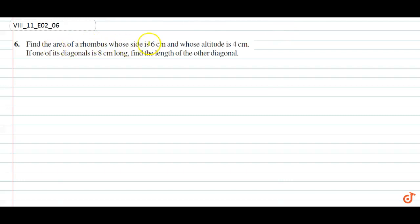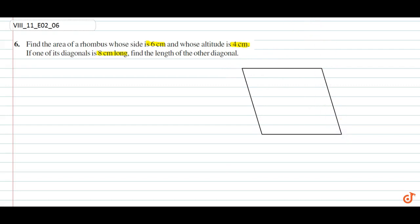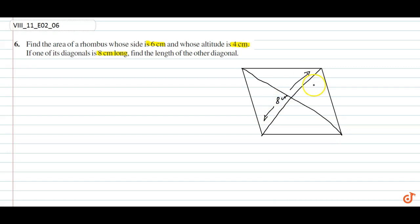Find the area of the rhombus whose side is 6 cm and whose altitude is 4 cm. If one of its diagonals is 8 cm long, find the length of the other diagonal.